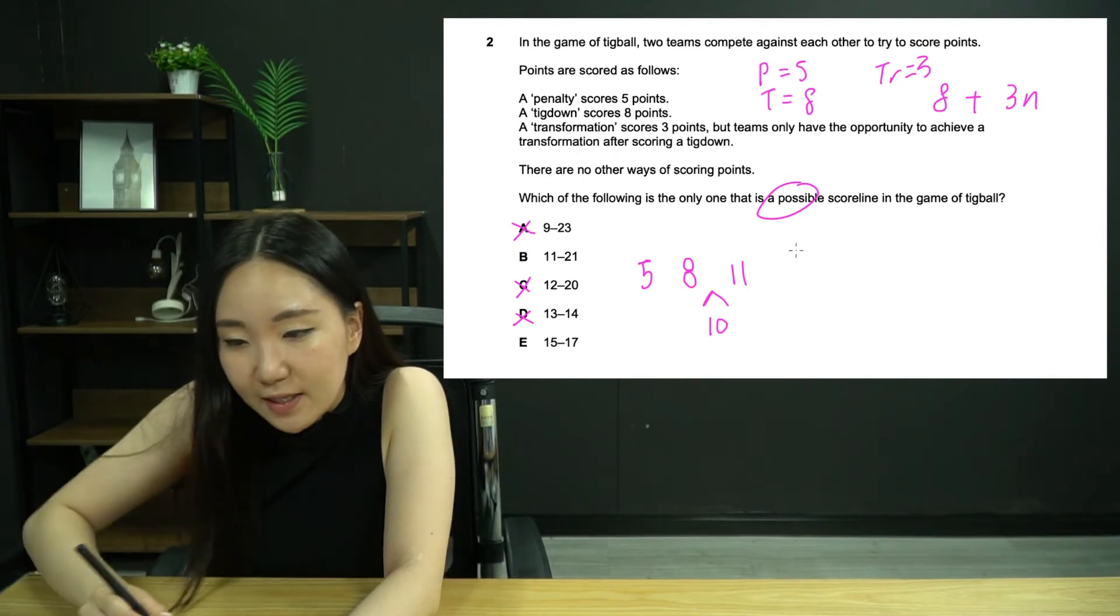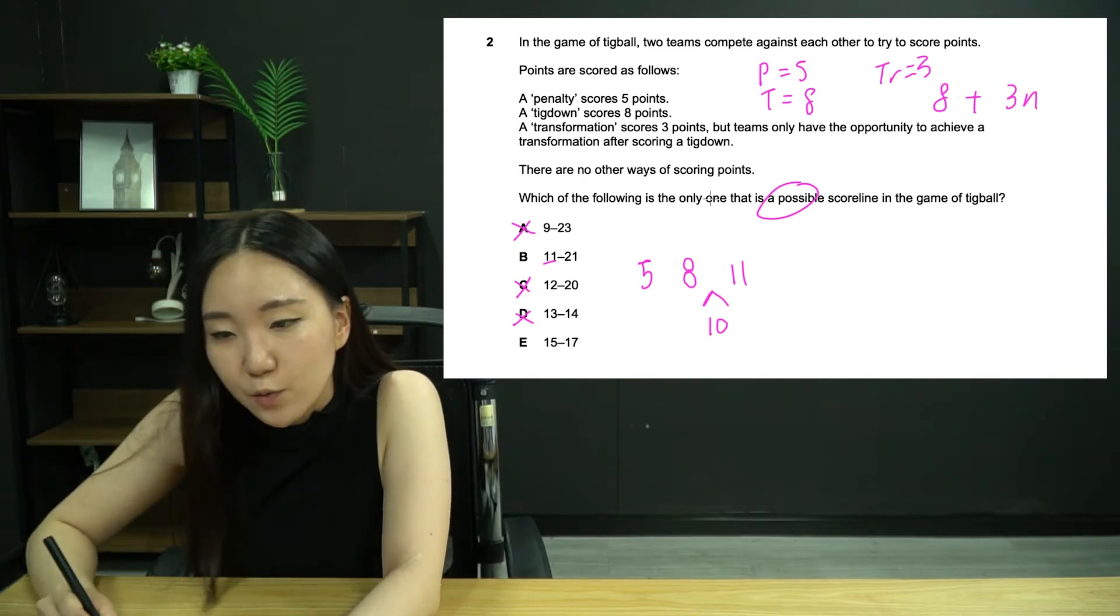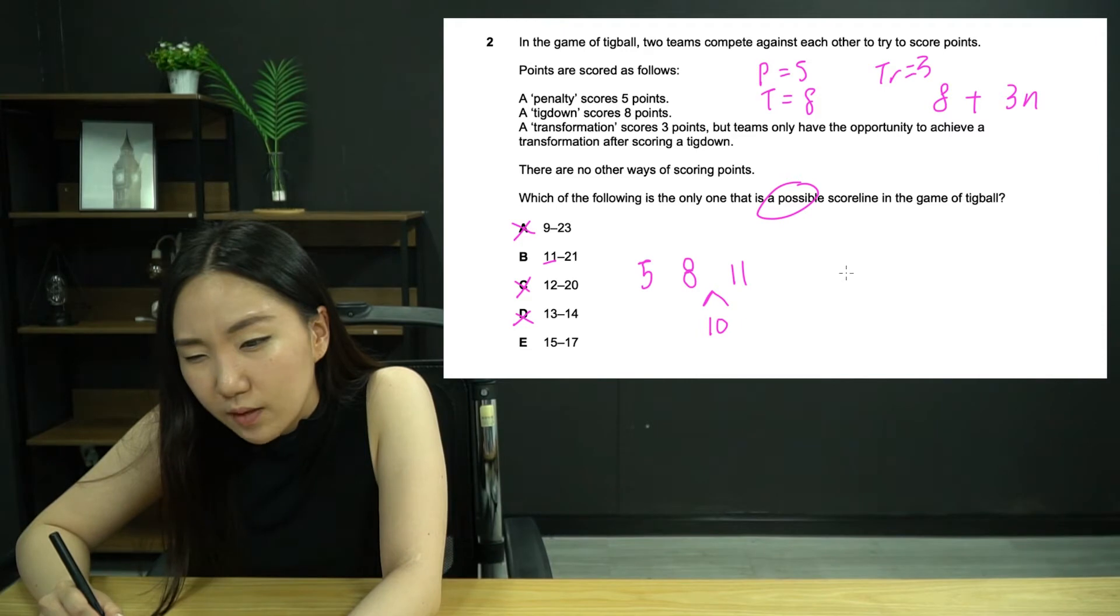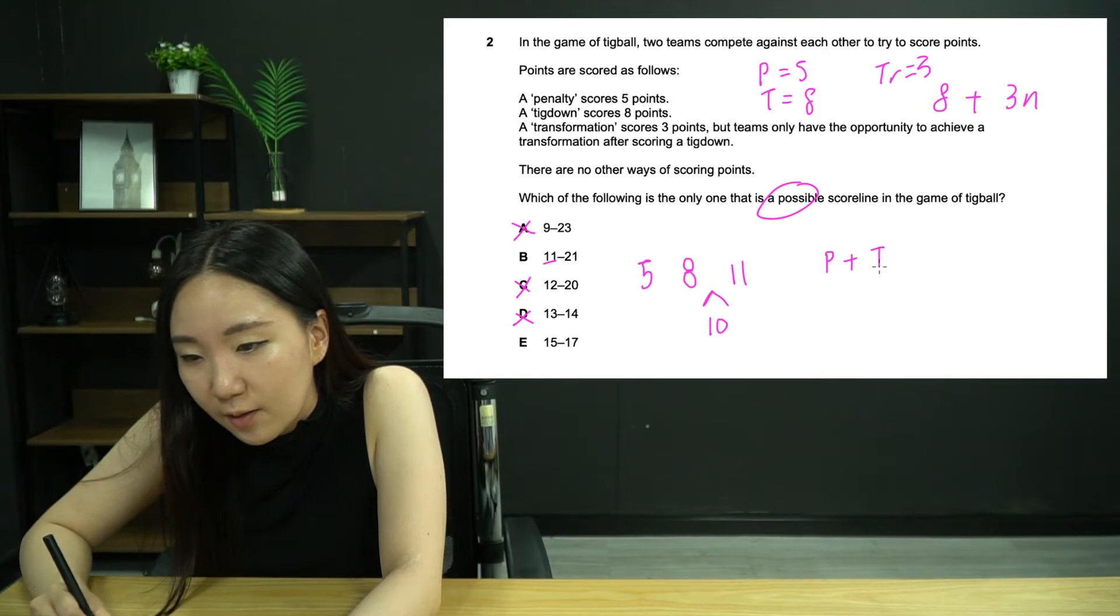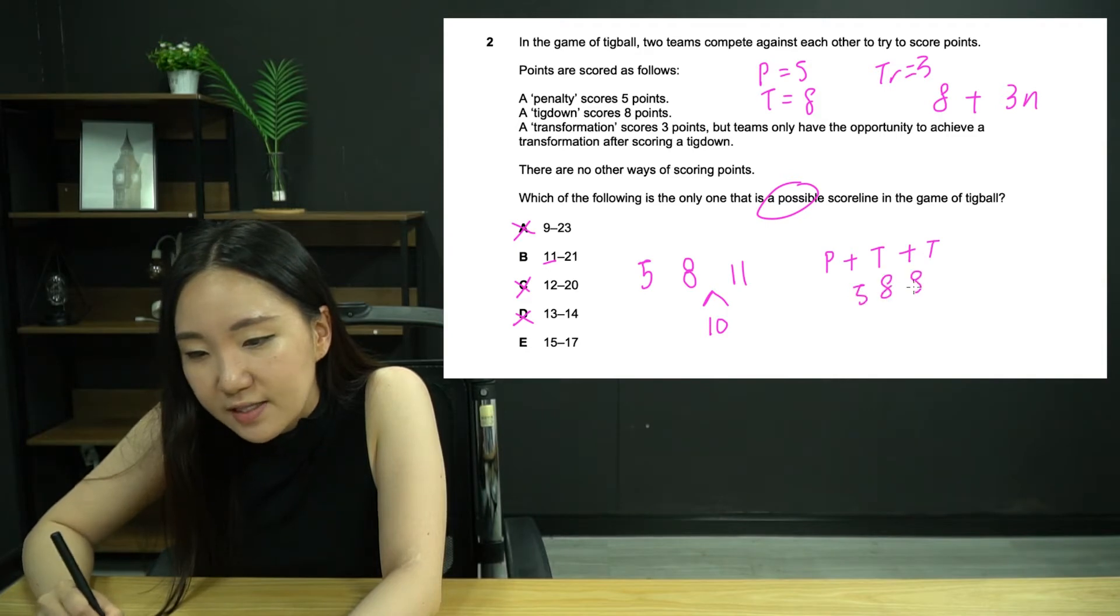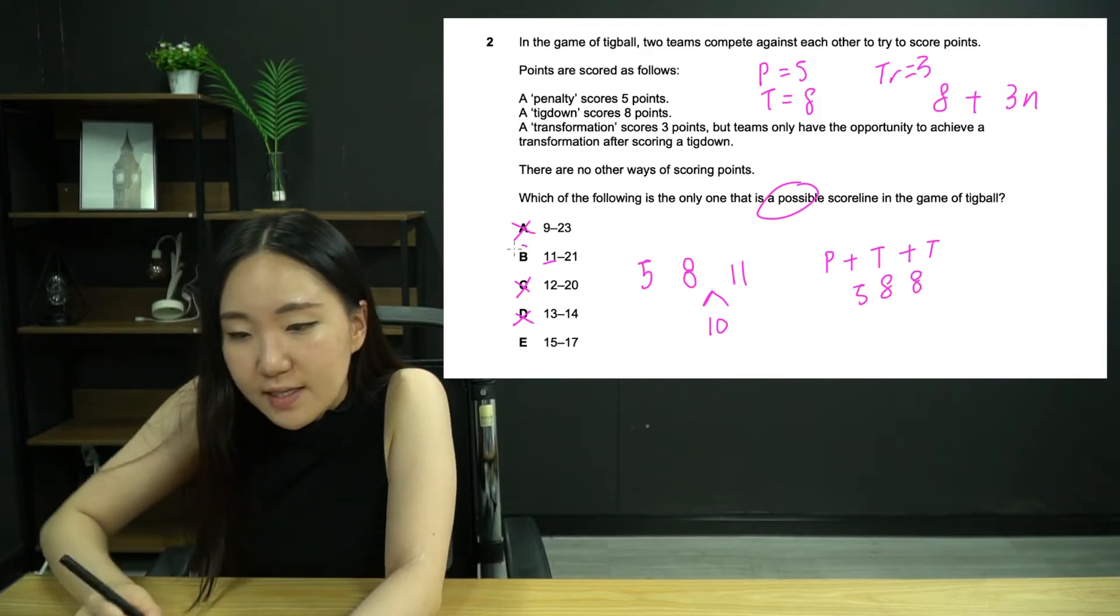So far we've got this combination, so nine is not actually possible. Can we do a 21? Yes. We can get a penalty followed by a tig down, which would give 13, and we can get another tig down. So that's five, eight, eight, which gives us 21. So B is the answer.